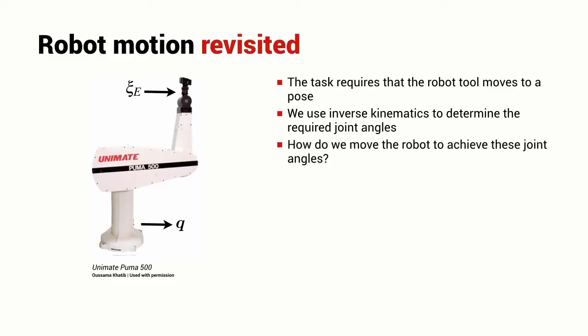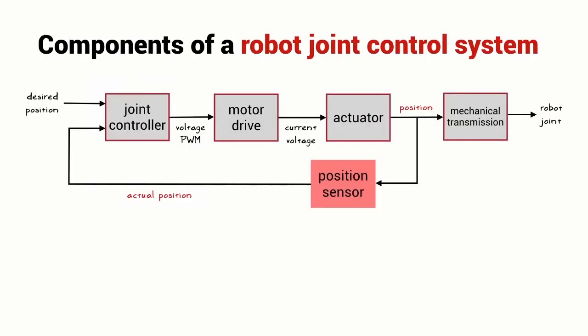What we haven't discussed so far is how we control the robot so that the joints move to the desired joint angles. The control of any one joint of a robot arm typically has a structure that looks something like this. In this diagram, we can see there's a loop, and that's a very important part of the architecture.